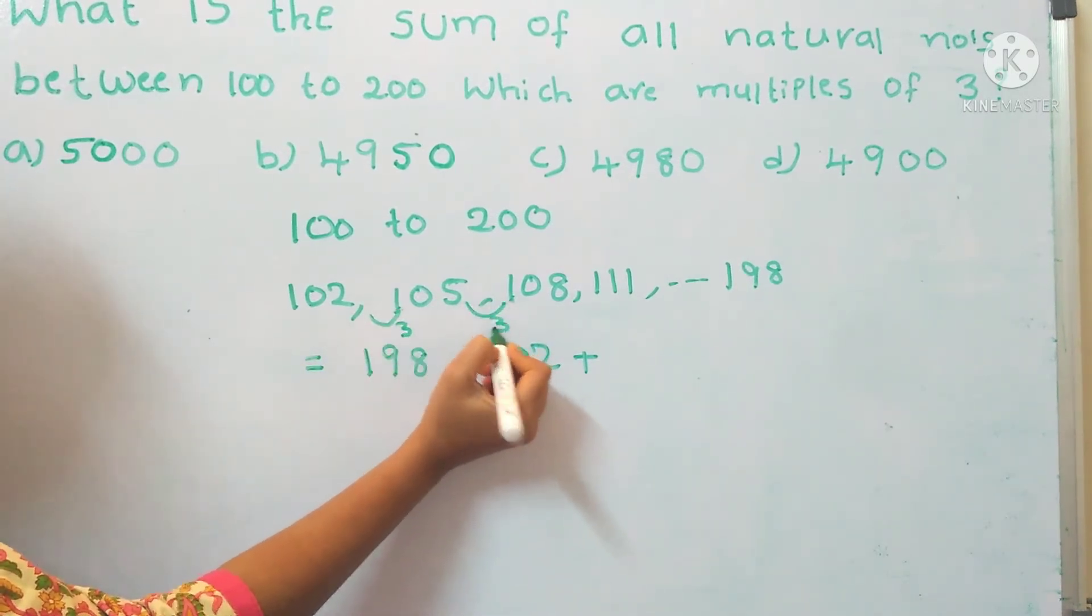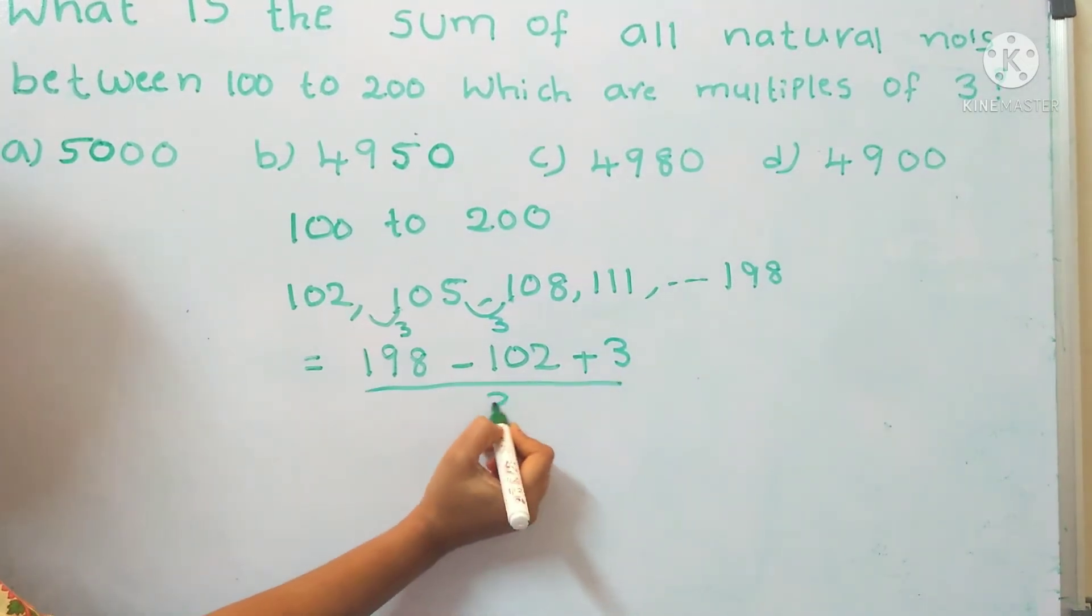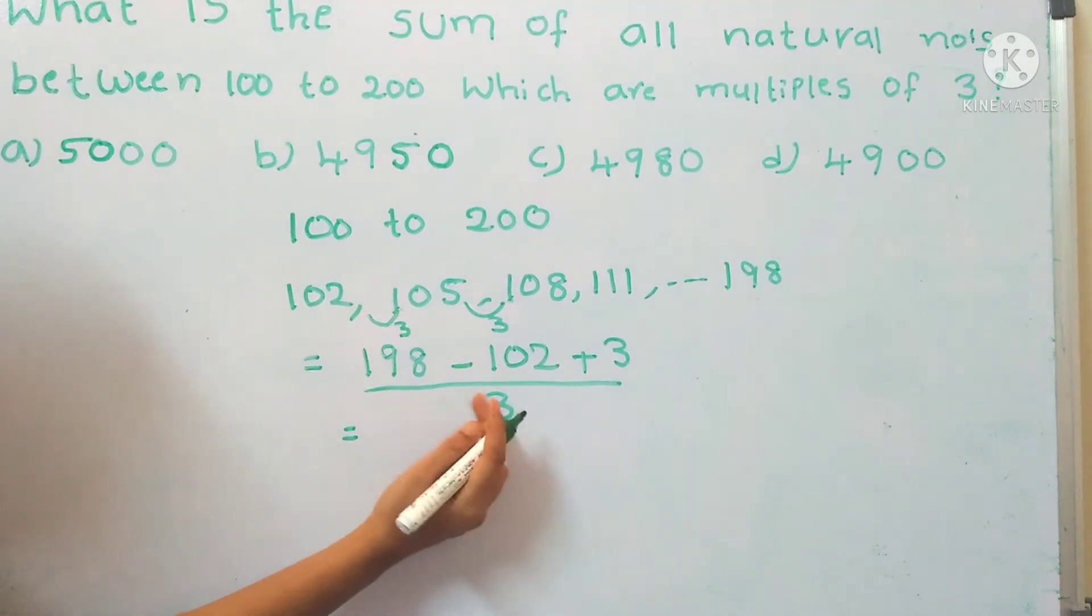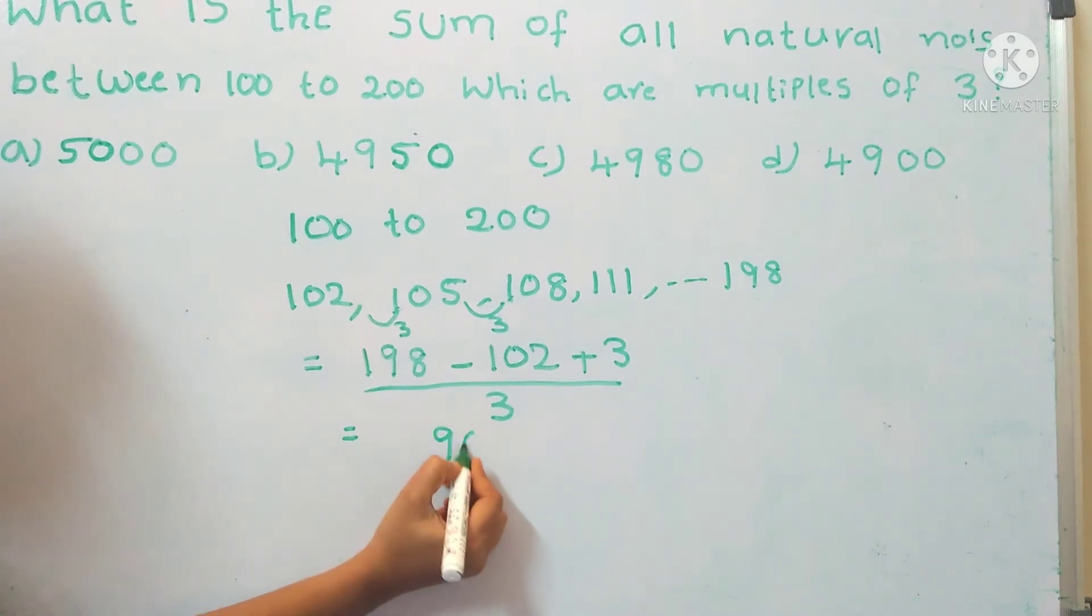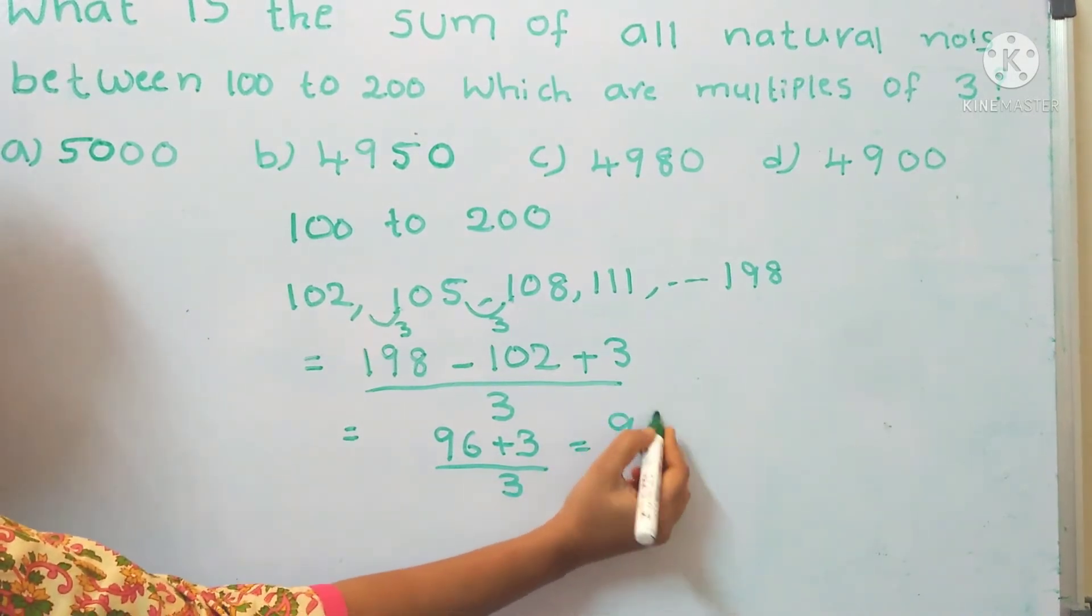105 minus 102, that is 3. So now, 198 minus 102, that is 96, plus 3, divided by 3.